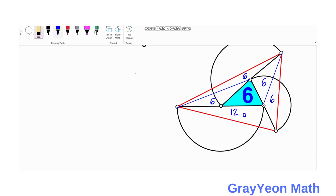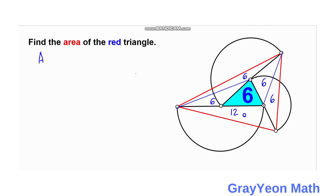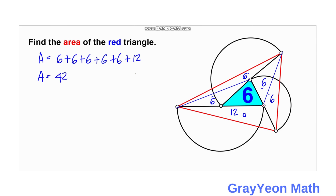Now for the final step: the area of the red triangle is found by adding all the values together. For the blue triangle we have 6, and for the white regions we have 6 plus 6 plus 12, giving us 6 plus 6 plus 6 plus 6 plus 6 plus 12, which adds up to 42 square units. That is our answer.